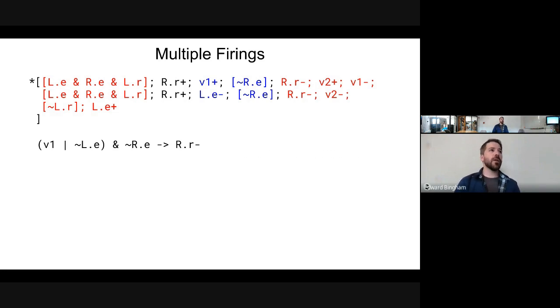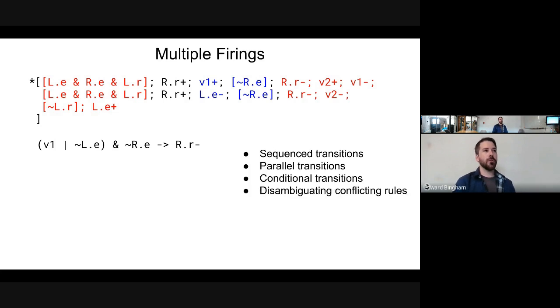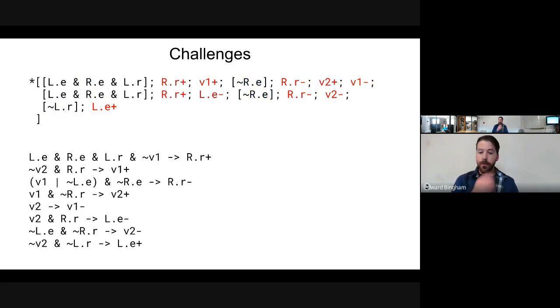We start running into issues: sequence transitions, parallel transitions, conditional transitions. And then we need to be able to disambiguate conflicting rules when we combine them together across each of those cases. And you can get combinations of these things - two transitions that are related across not just a parallel composition, but also a conditional composition as well. If we keep doing that, we generate production rules for each of the transitions in this HSE specification.